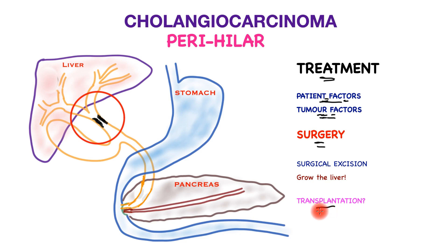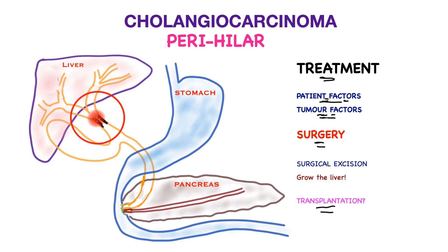Liver transplantation has been deployed in the treatment of perihilar cholangiocarcinoma, especially in patients with primary sclerosing cholangitis. Initially attempted for good-prognosis tumors, increasingly reasonable results are being reported for localized tumors that have not spread beyond their site of origin. Long-term data are awaited before a final decision can be made on this aspect of treatment.